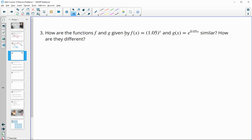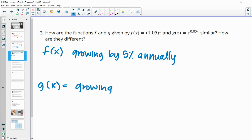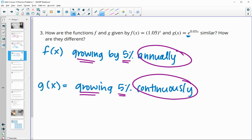Number three, how are the functions f and g given by f of x equals this and g of x equals this similar, and how are they different? So this f of x is growing by 5% annually. And then the g of x is also growing 5%, but this one with the e is growing 5% continuously. So they're both growing by 5%, just slightly different annually versus continuously. The growing and the 5% is the same, but then once a year versus continuously growing that much for g of x would be a little bit different.